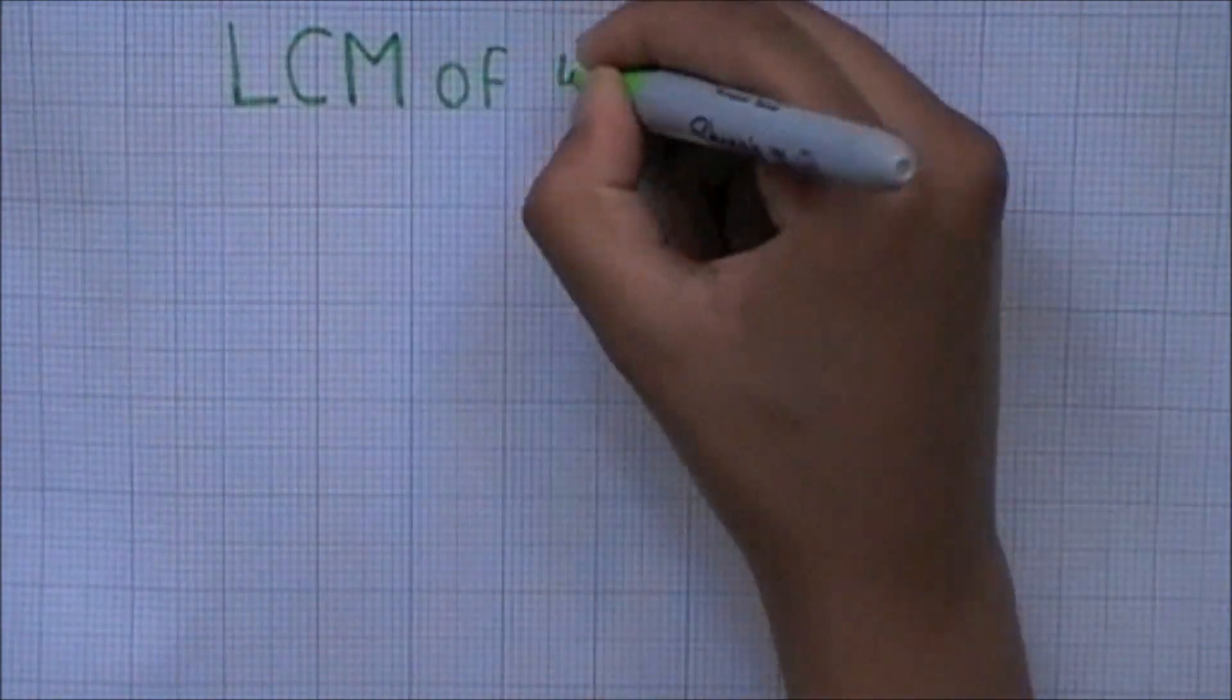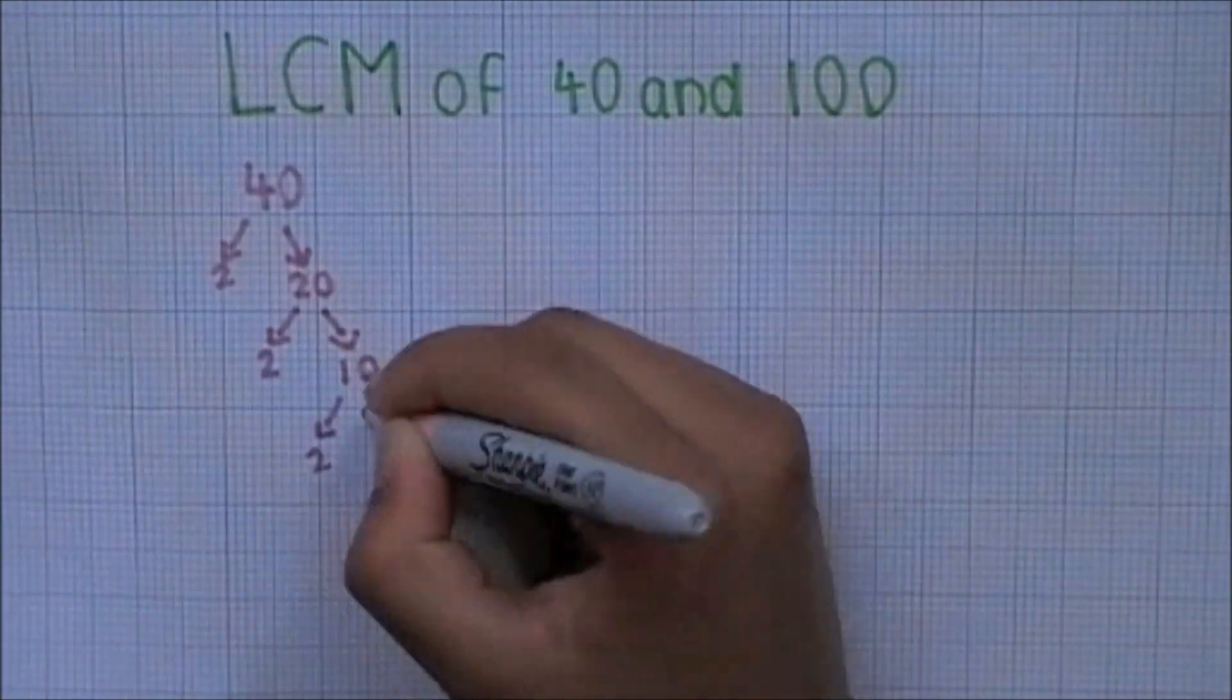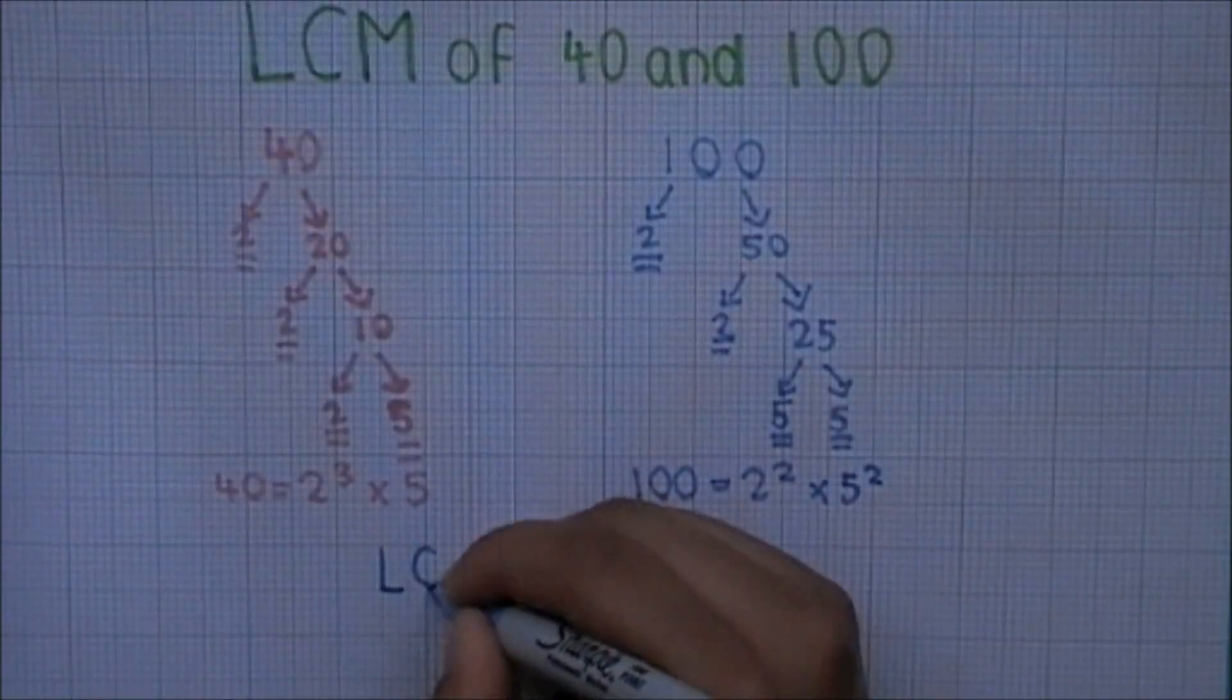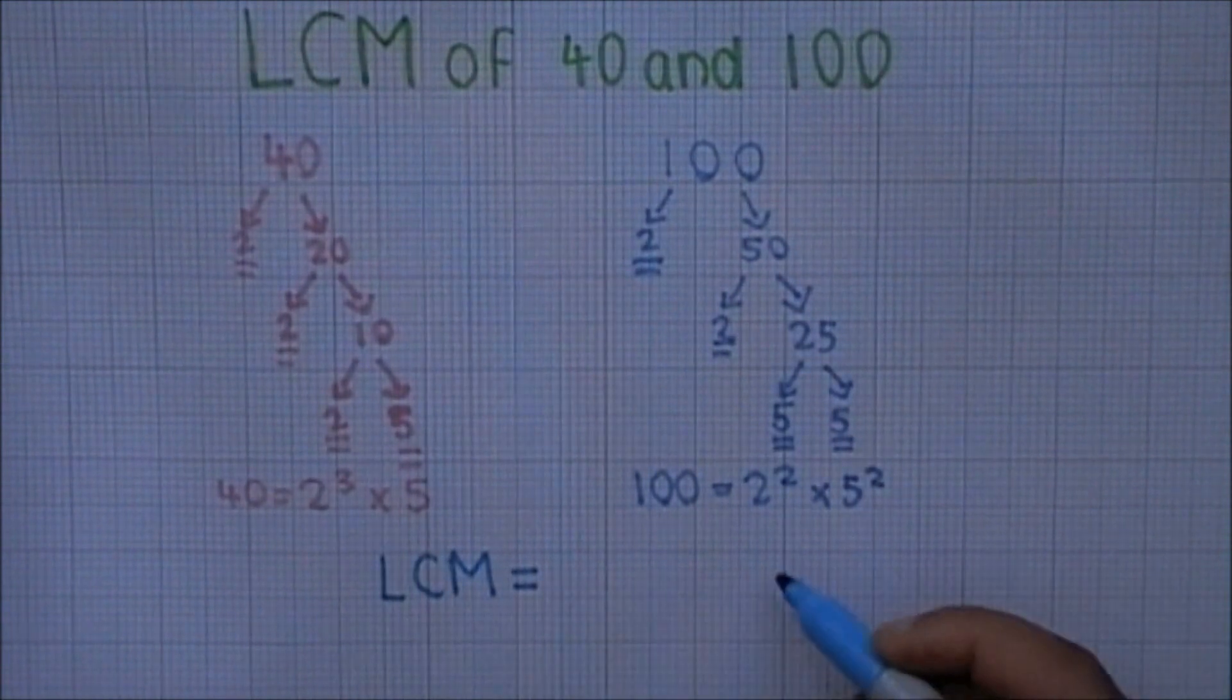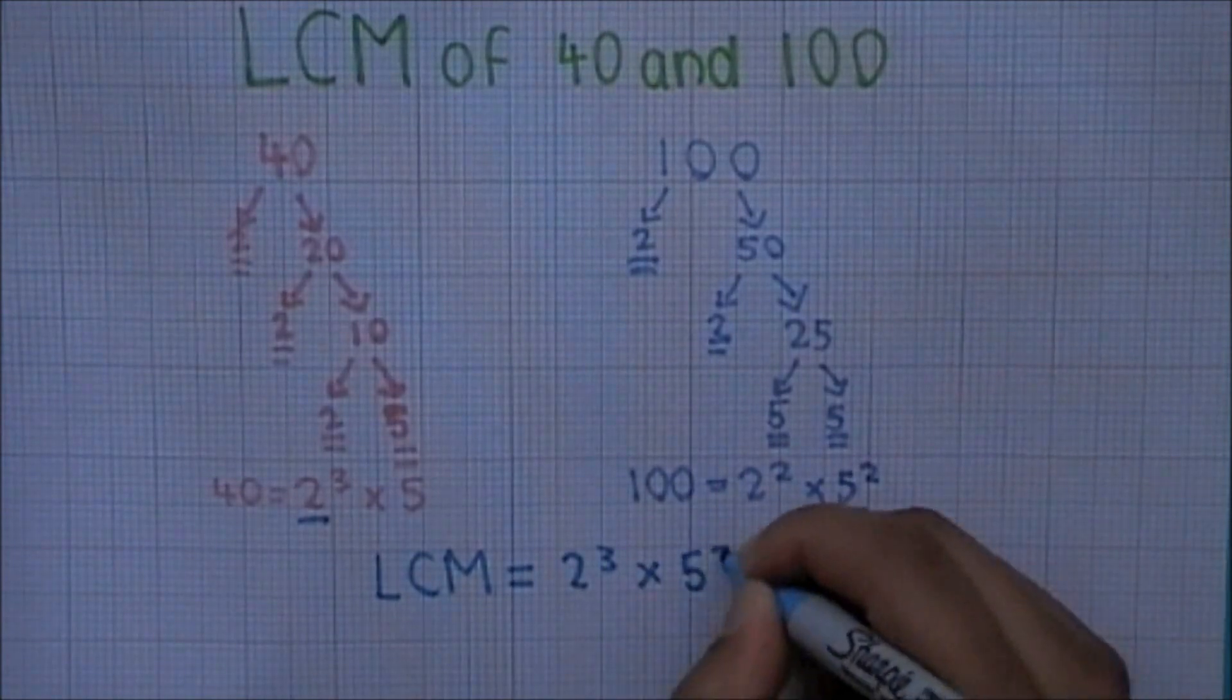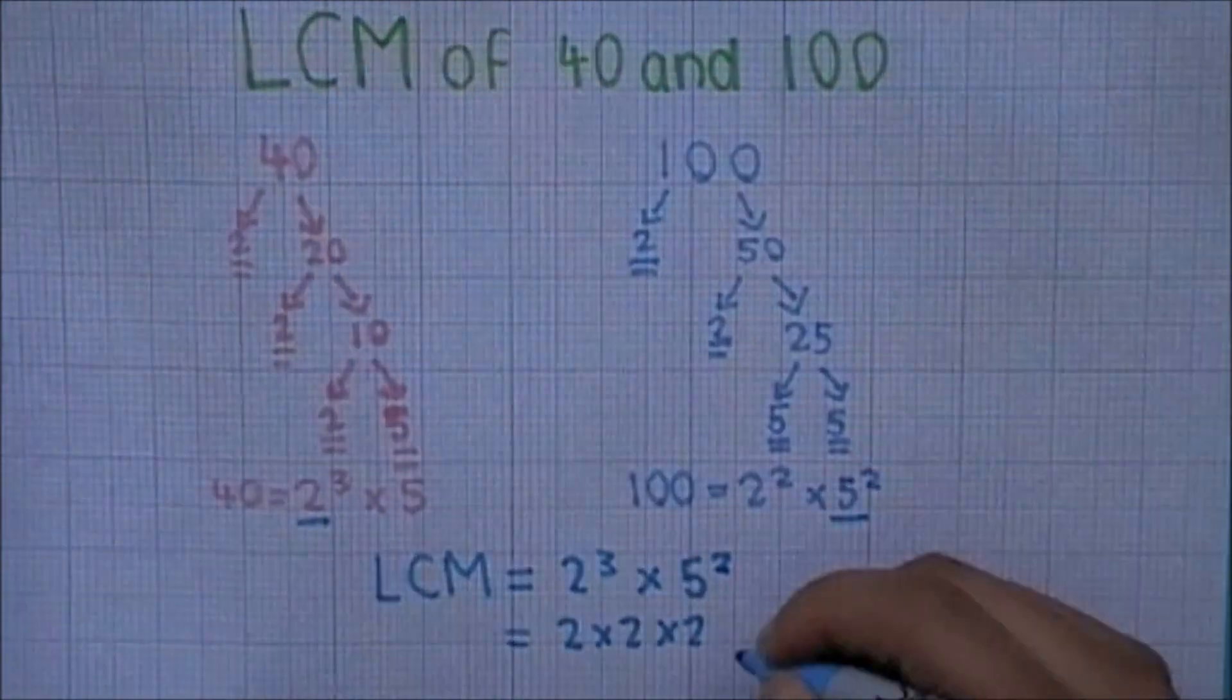Now, let's try with the LCM this time. First, we can zoom through the factor tree part, as it was the same as before, and it's the answers which we need to use to find the LCM. All we need to do for the LCM is compare the values, so 2 to the power of 3 and 2 to the power of 2, and use the biggest one, which would be 2 to the power of 3. Then, the same for the other two values.